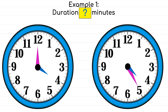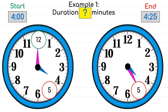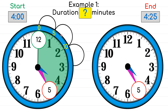Let's apply this to our first example and find the duration in minutes. The starting time points at 4 o'clock and the ending time points at 4:25. Look at the minute hands — the starting minute hand points at 12 and the ending minute hand points at 5. Start hopping from 12, writing 0 on top, and skip count: 0, 5, 10, 15, 20, 25. All together, 25 minutes have passed from the start to the end.